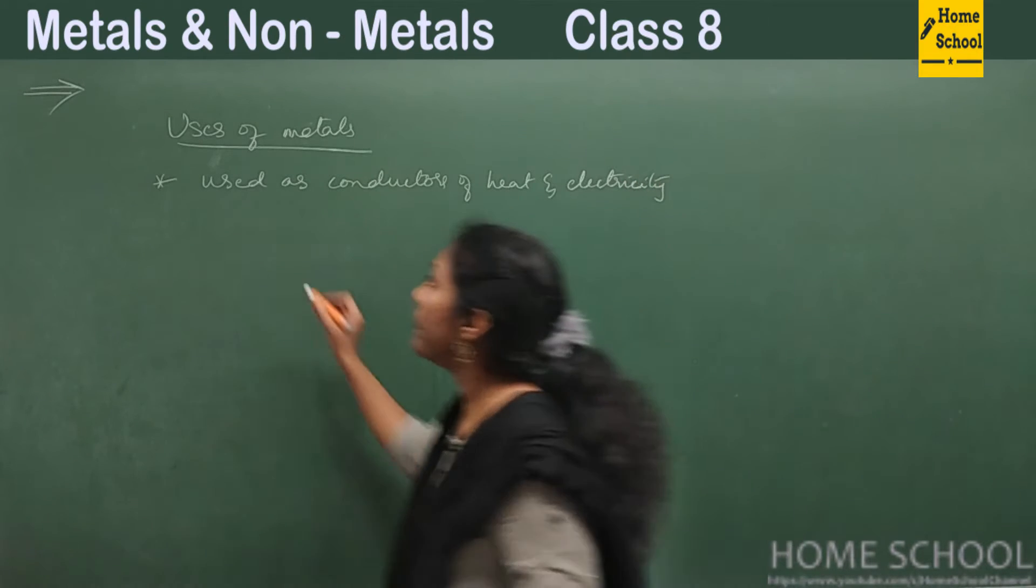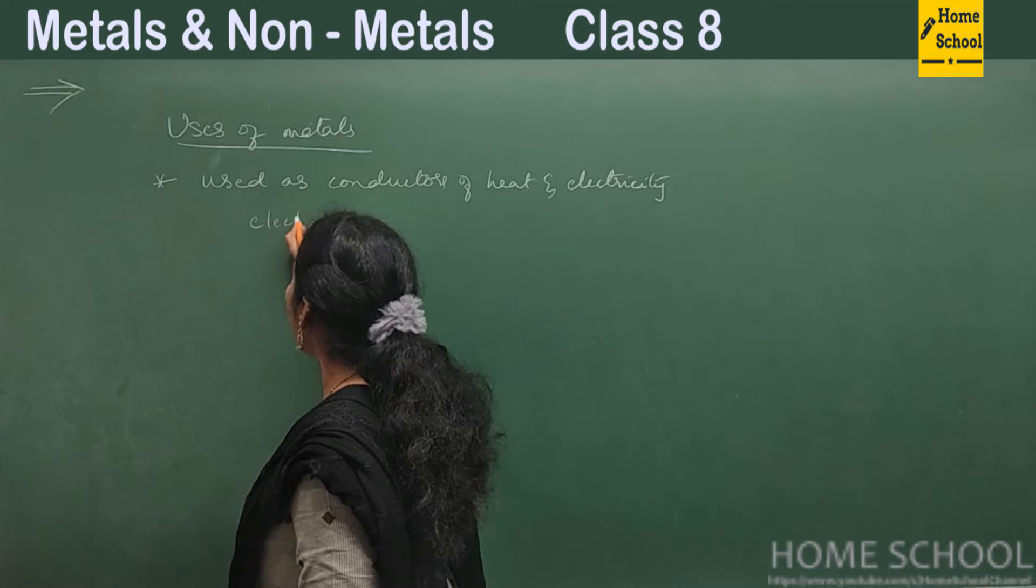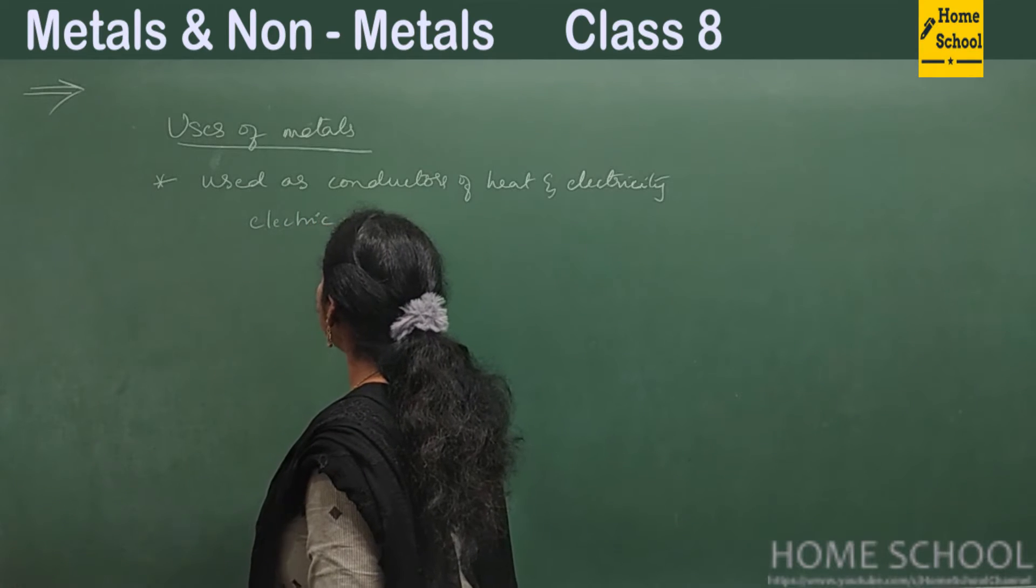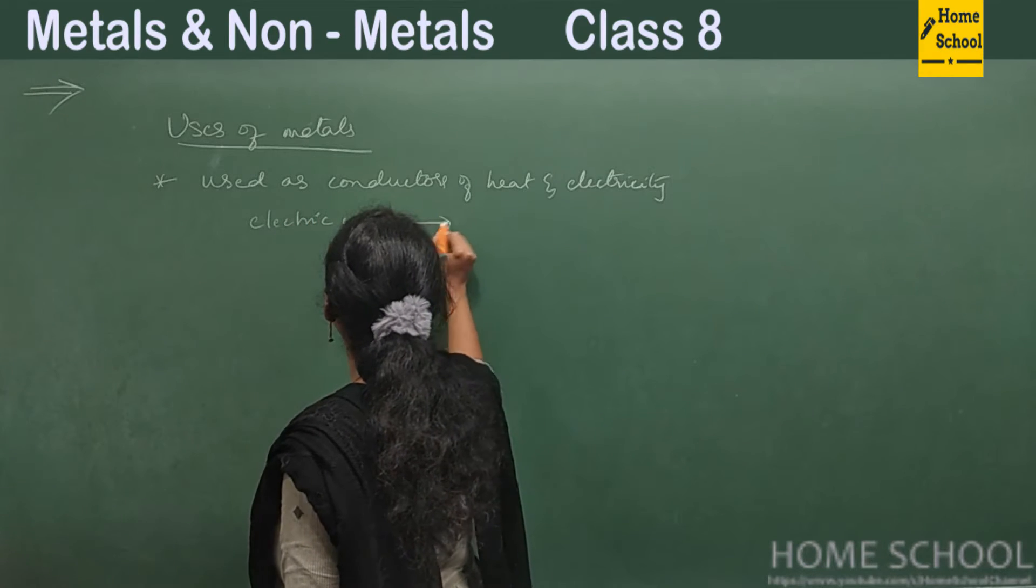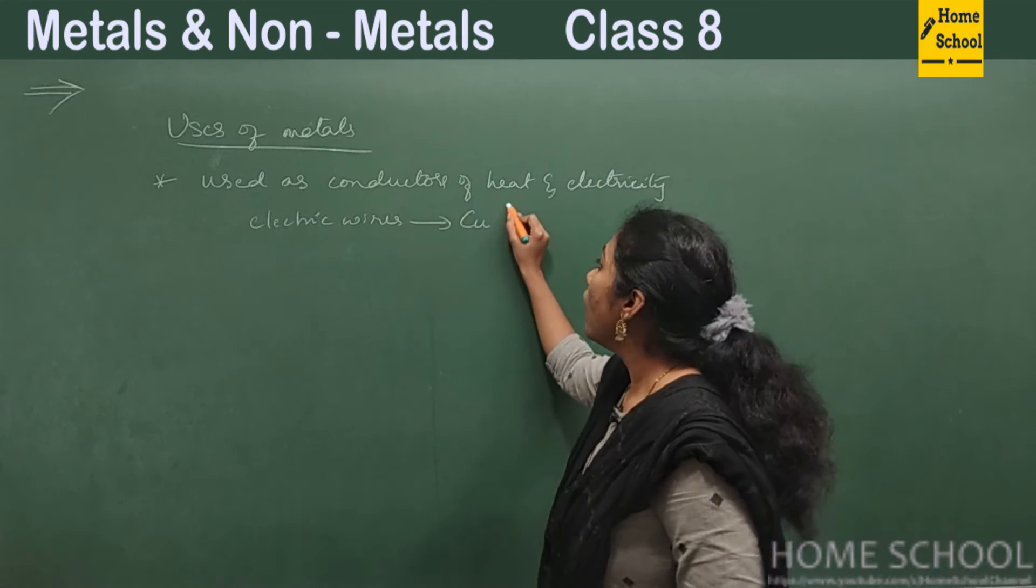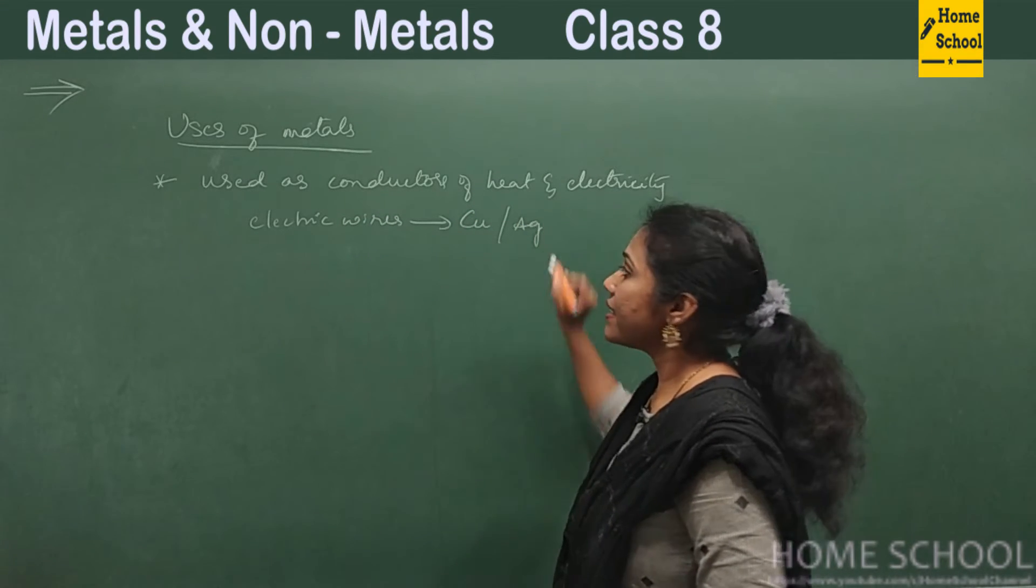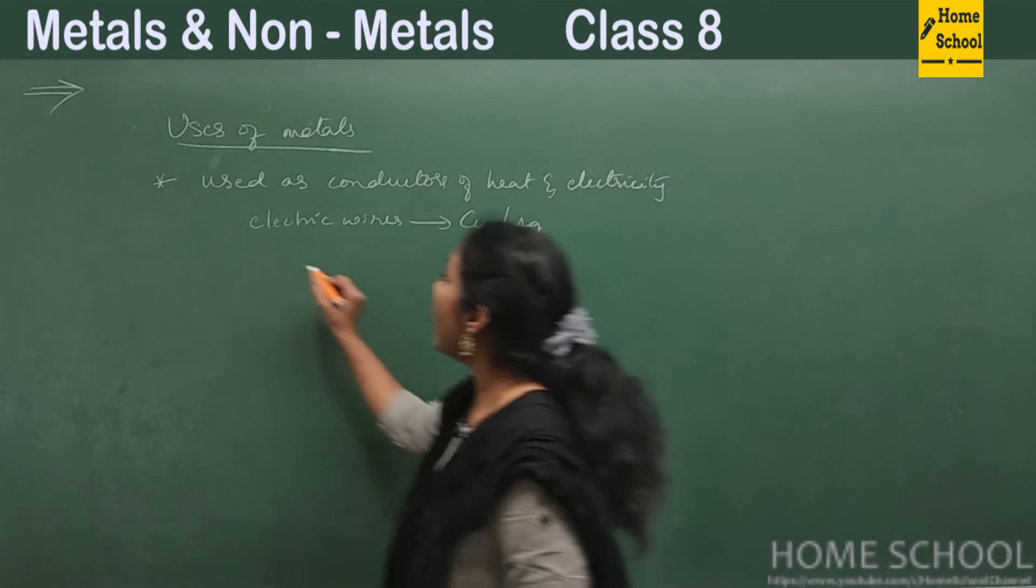Our electric wires are made up of copper. Cu is the symbol for copper, or it can be made up of silver. And you know, our cooking utensils—if you have observed in your kitchen—most are made of metals.